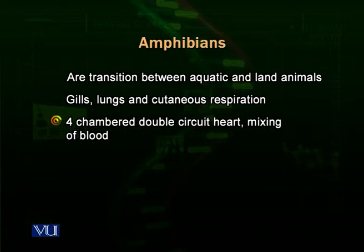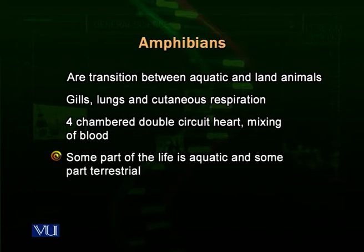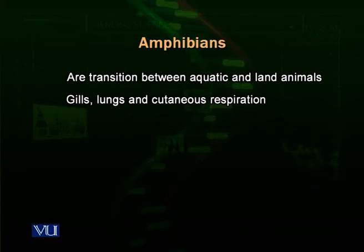Amphibians respire through lungs in their adult life. Most of their life is spent on terrestrial land, but for reproduction they must go to water. They also carry out cutaneous respiration — their skin is richly supplied with blood vessels and gas exchange occurs through these capillaries between the skin and the water. So they carry out respiration through their skin.